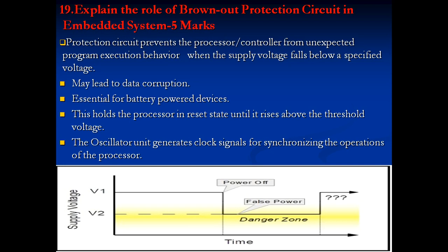The brownout protection circuit prevents the processor or controller from unexpected program execution behavior when the supply voltage falls below the specified voltage. If unexpected execution behavior occurs due to the supply voltage dropping, it may lead to data corruption. This is essential for battery-powered devices. The circuit holds the processor in reset state until the voltage rises above the threshold. The oscillator unit generates clock signals for synchronizing processor operations. If power enters a danger zone — below the specified voltage — the brownout circuit synchronizes the processor operations.